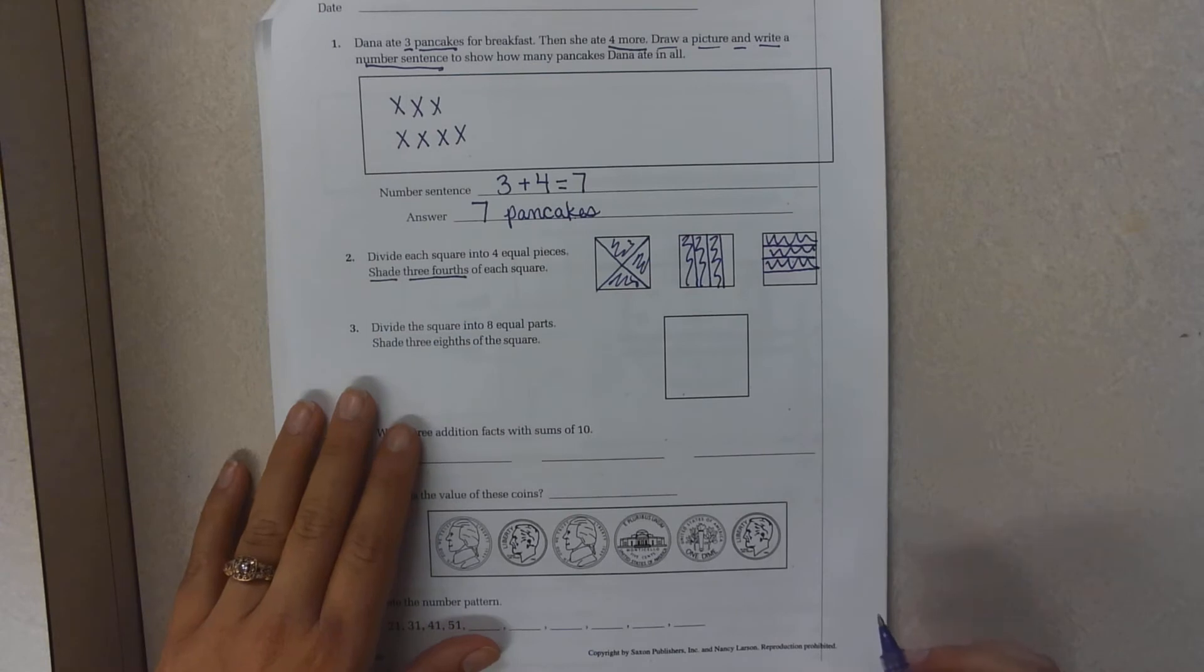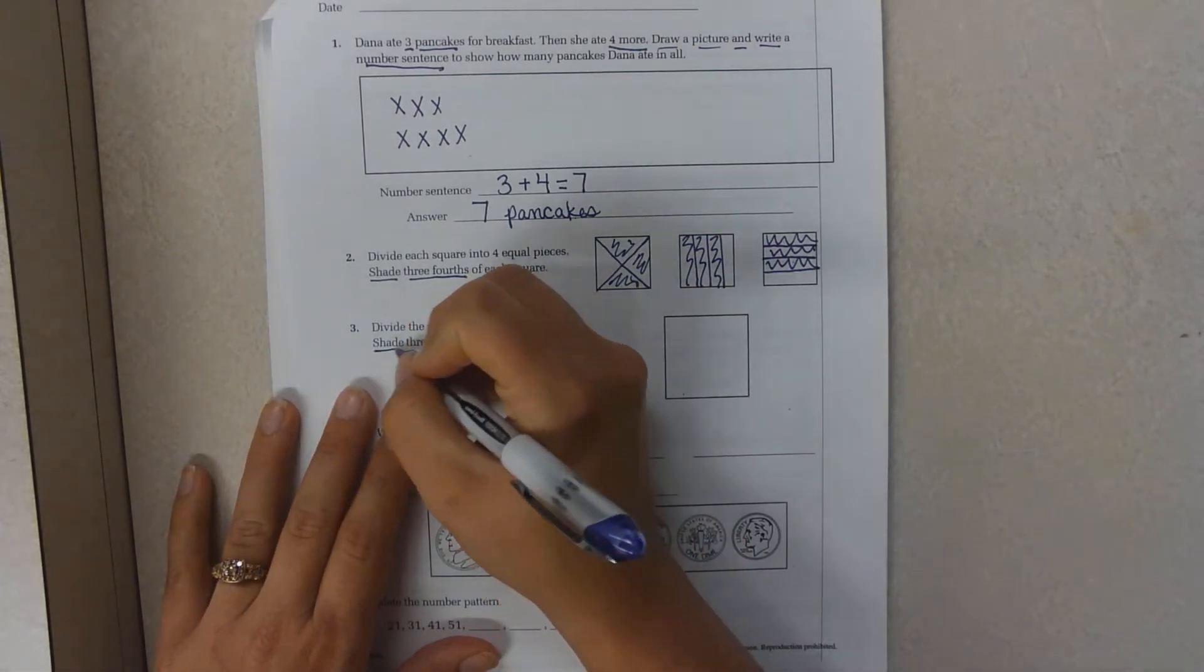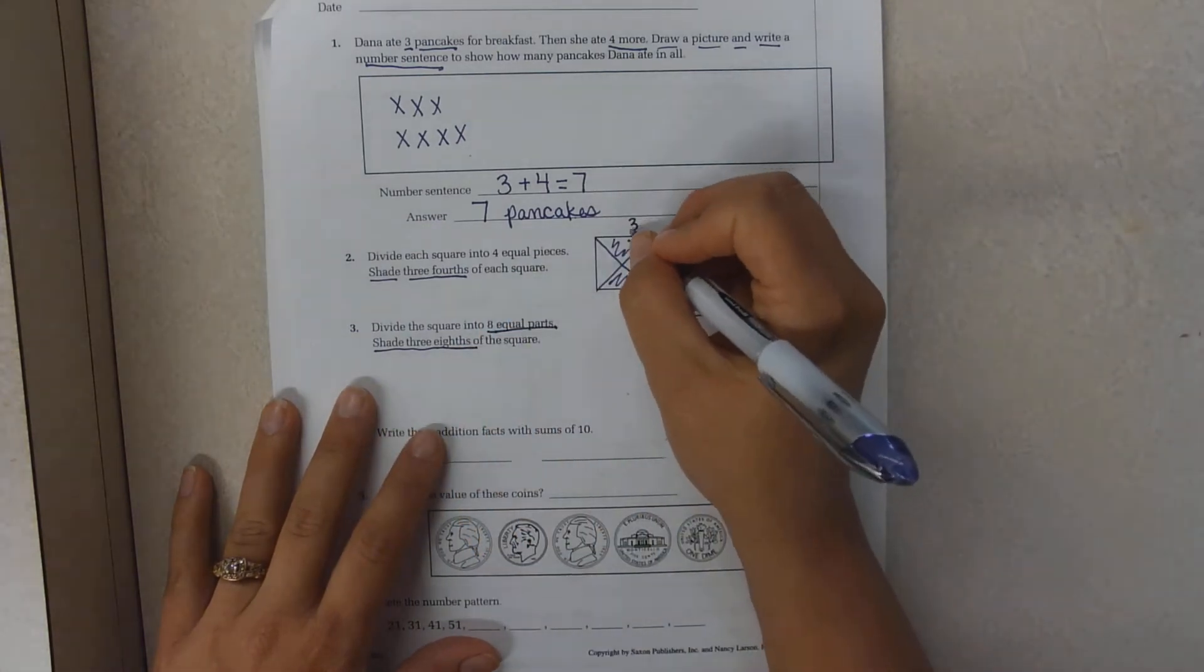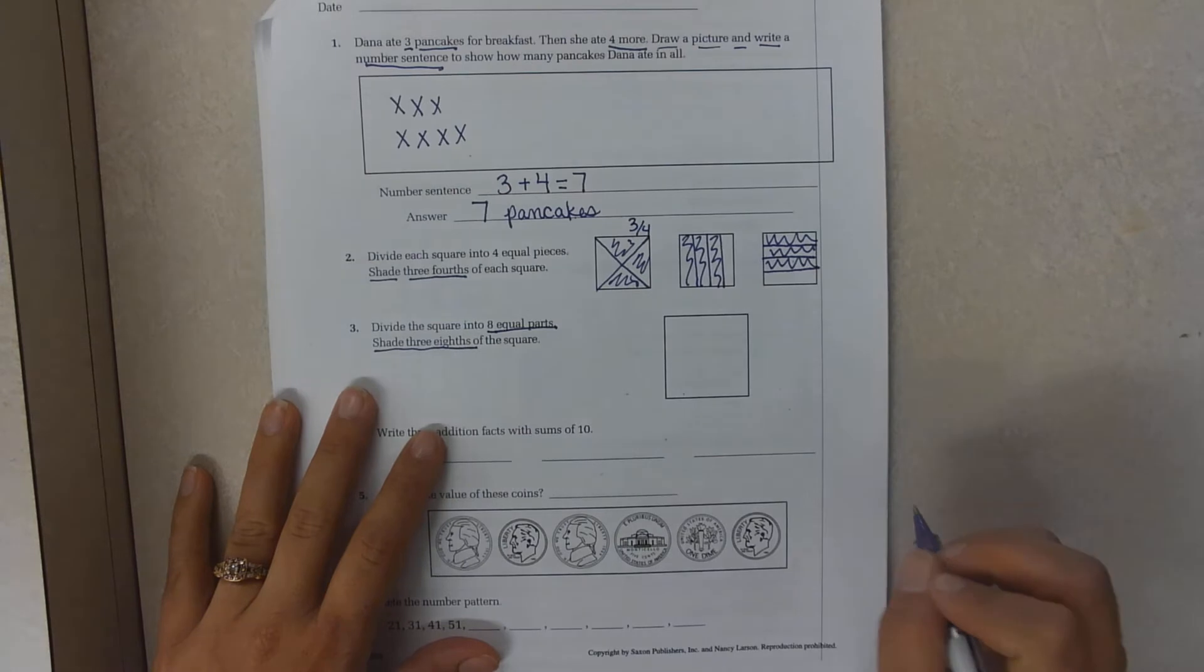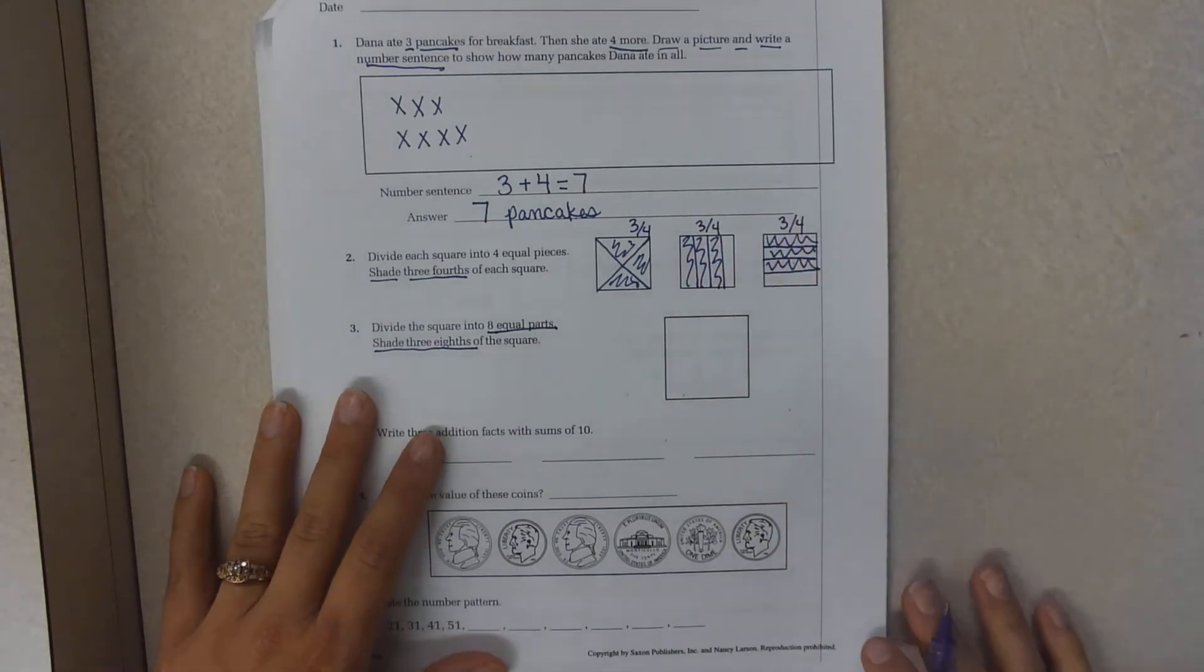Divide the square into eight equal parts. Shade three eighths. So right here we did three fourths. This is three out of four. Three out of four. Now we're doing eight.